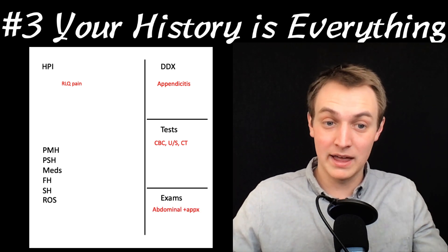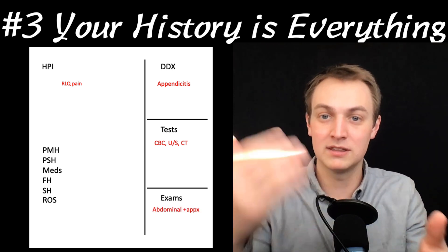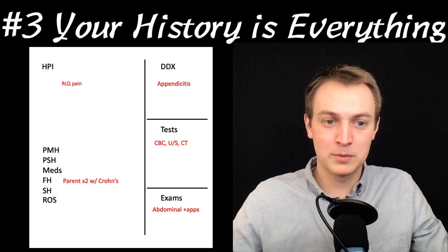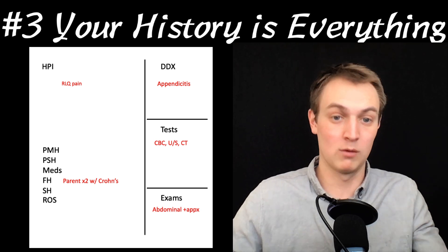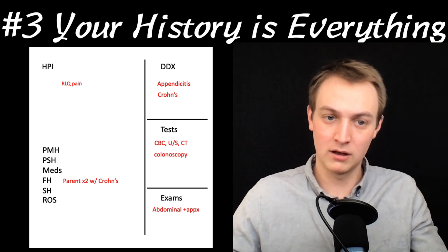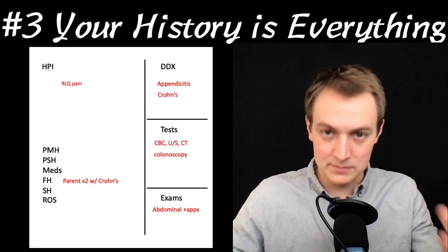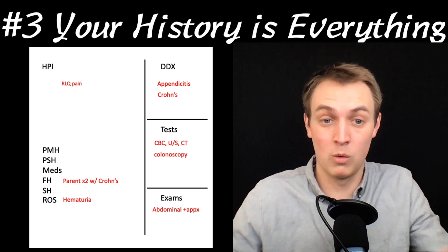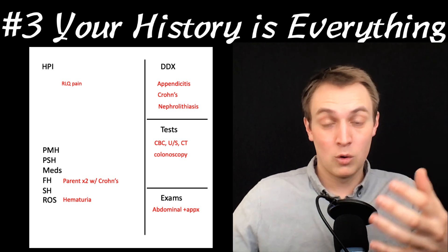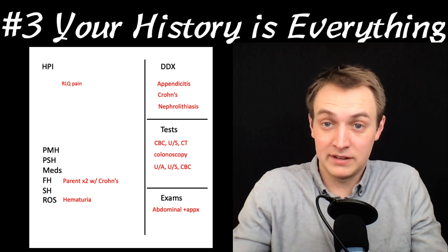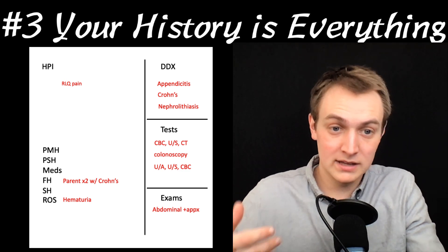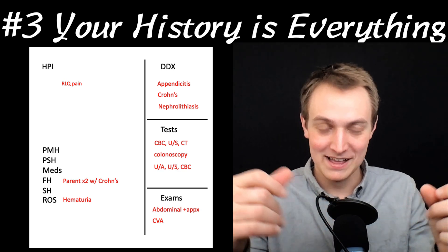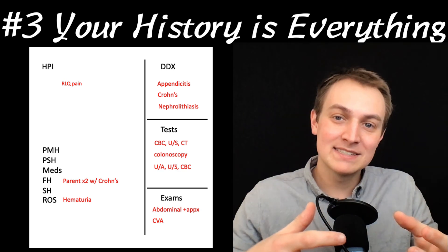You may also want to write down exams, because when you're done with the history you'll know exactly which exams to do — it's a really efficient use of your time. Now you keep taking the history. You find out they have a family history — both parents have Crohn's disease. Obviously put Crohn's disease on the differential, and colonoscopy is good for that. The abdominal exam and appendix exam are probably good. Then during the review of systems they mention hematuria — okay, it could be nephrolithiasis or something with the kidneys. In that case you'll definitely need to order a urinalysis, maybe another ultrasound of the kidneys, and you'll want to check CVA tenderness.